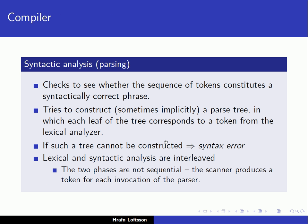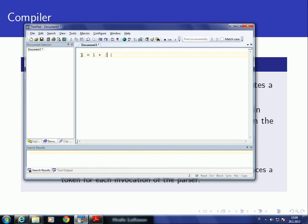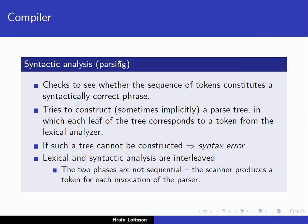If a tree cannot be constructed for a particular string, then we have a syntax error. So in the example given earlier, we cannot construct or derive that string from the context-free grammar — we cannot build a parse tree — and therefore we have a syntax error. It's the function of the parser to find out whether we have a syntax error. Notice that even though lexical analysis and syntactic analysis are conceptually separate components, they are often interleaved: the parser calls the lexical analyzer over and over again to ask for the next token from the input string.